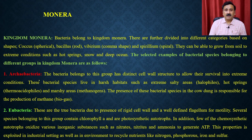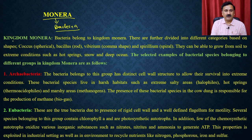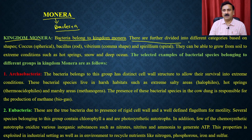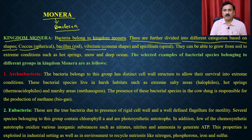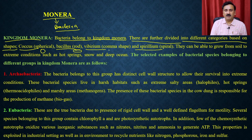Kingdom Monera is where bacteria belong. Bacteria are further divided into different categories based on shape: coccus (spherical), bacillus (rod-shaped), vibrio (comma-shaped), and spirillum (spiral). They can grow from soil to extreme conditions such as hot springs, snow, and deep oceans.